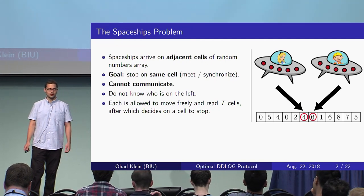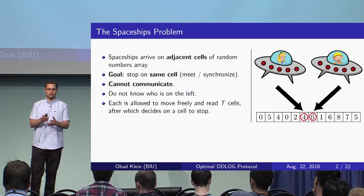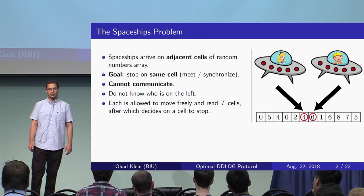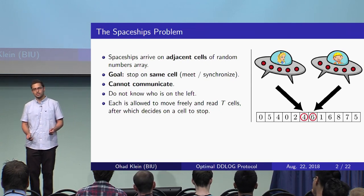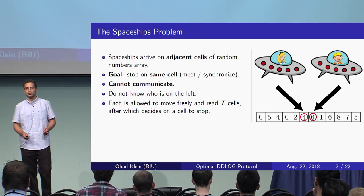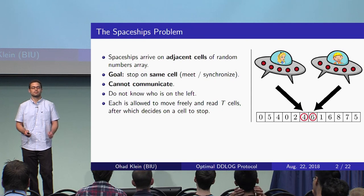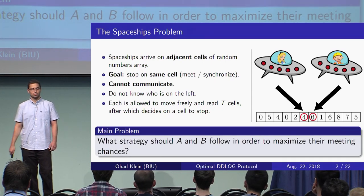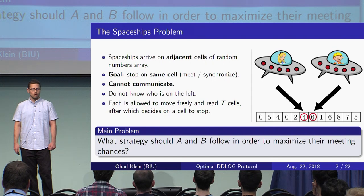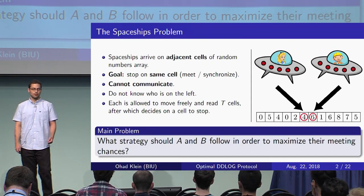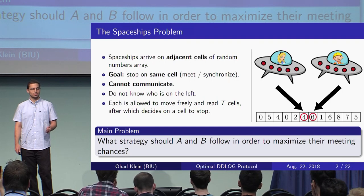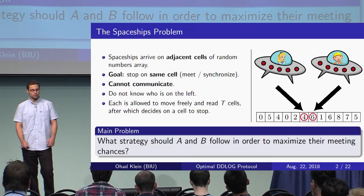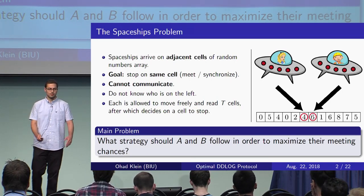Their goal is to stop on the same cell. It can be shown that no matter what strategy Alice and Bob follow, they cannot guarantee to stop on the same cell. So the spaceships problem is: what strategy should Alice and Bob follow in order to maximize the probability to meet or to synchronize? This is the spaceships problem.